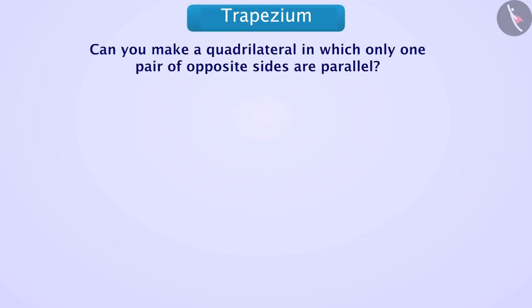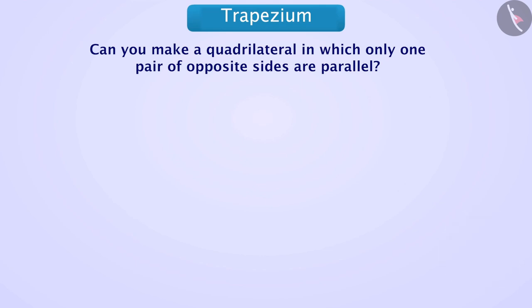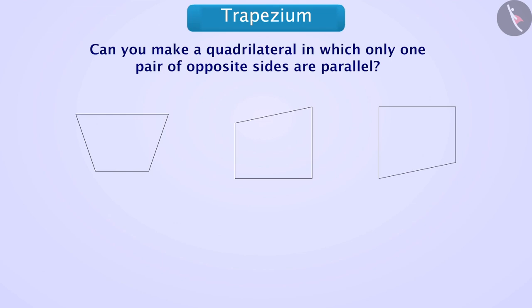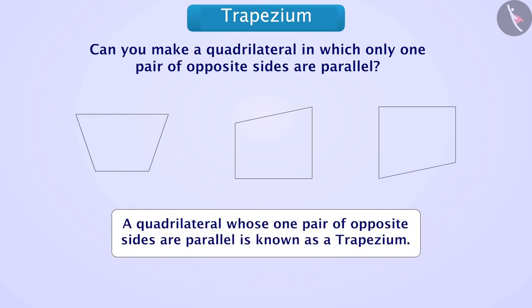Now let's learn what a trapezium is. Can you make a quadrilateral in which only one pair of opposite sides are parallel? You can pause the video and try this yourself. A quadrilateral whose one pair of opposite sides are parallel is known as a trapezium.